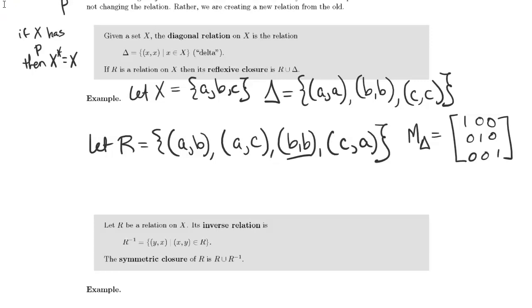So the reflexive closure of R is the relation R union delta, which is AA, AB, AC, BB, CA, and CC.